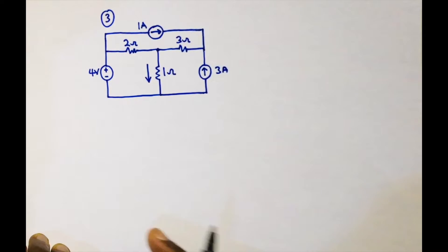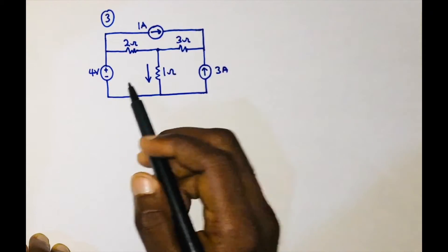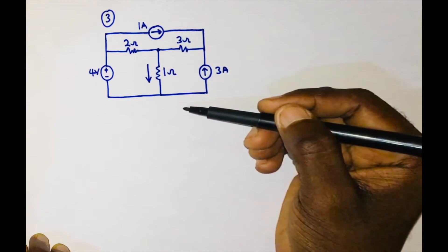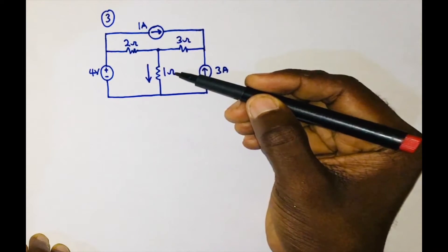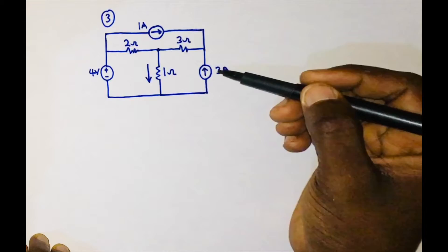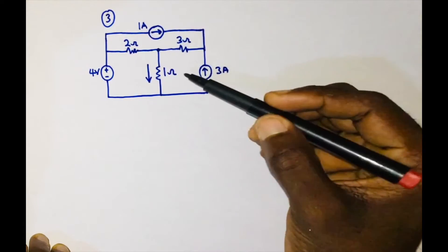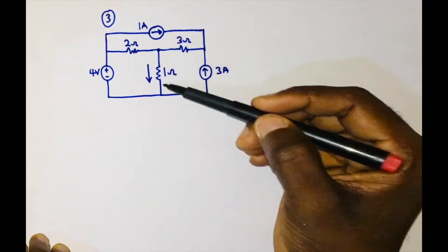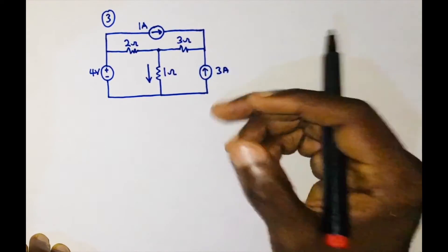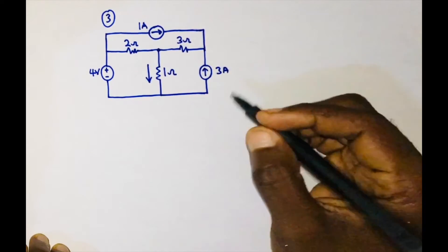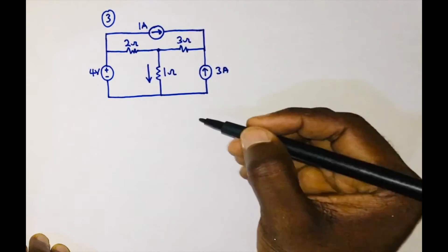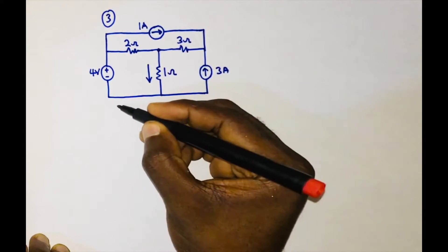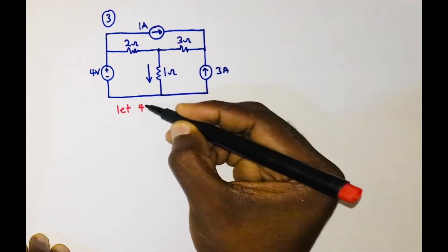We are going to consider one source at a time, deactivate the other sources, and find the current flowing through the one ohm resistor. We do the same for the other two sources, and at the end we sum up the current values to get the total current flowing through the one ohm resistor. To begin, let's consider the four volts first, acting alone.